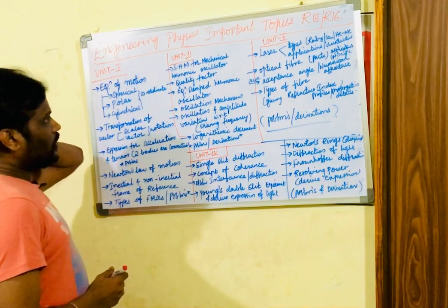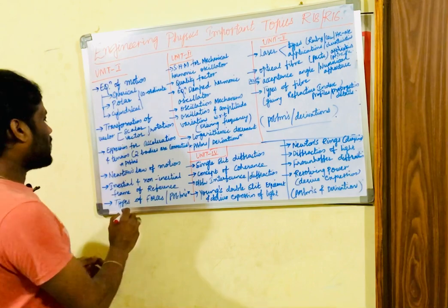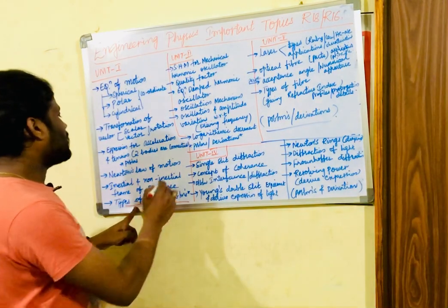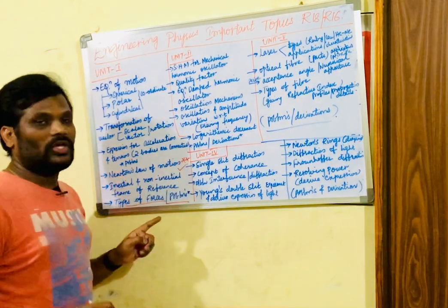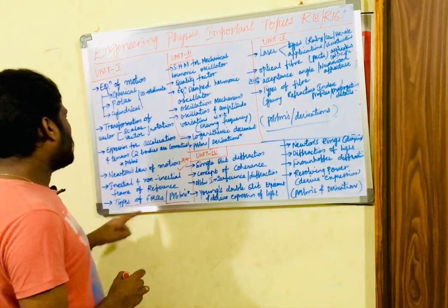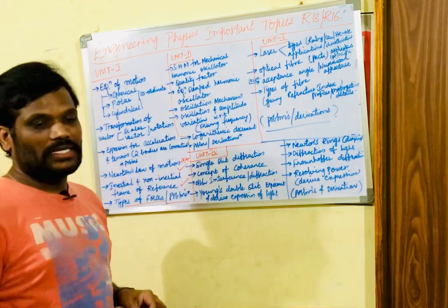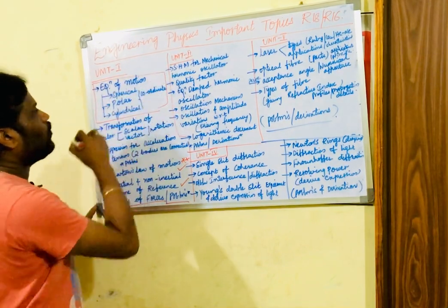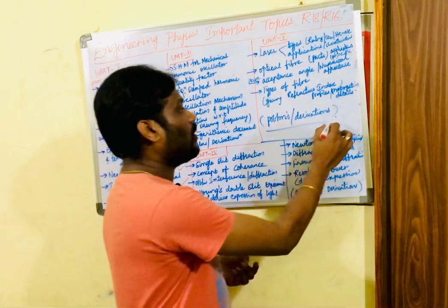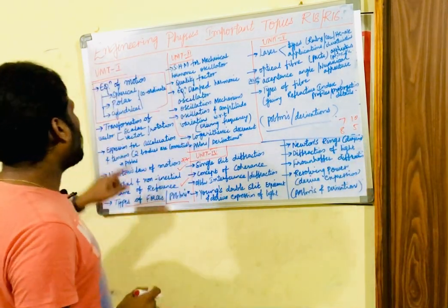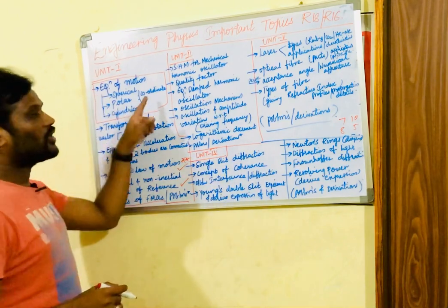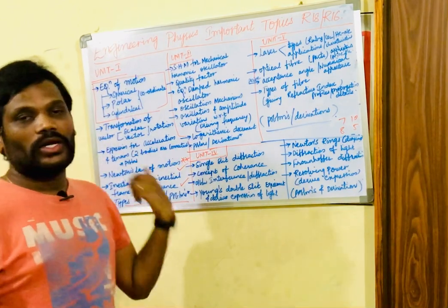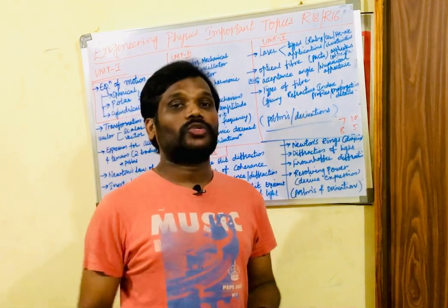First and foremost, it is already known to you all from your school physics — what are the different types of forces and problems related to them. We should know the minimum basic concepts related to forces. Newton's law of motion — there may be a derivation as well as a problem asked related to this. Next, inertial and non-inertial frames of reference is one of the questions repeatedly asked for 7 marks. Any one question will be asked for sure — either 7 marks, 8 marks, 10 marks, or 5 mark combination from Unit 1 — stating that you derive the equation of motion for coordinate systems in spherical, polar, and cylindrical coordinate systems. Make sure to work out all these 3.